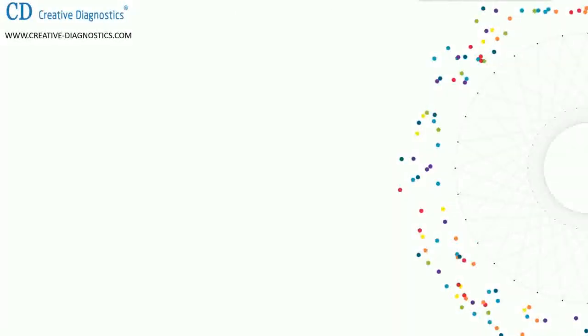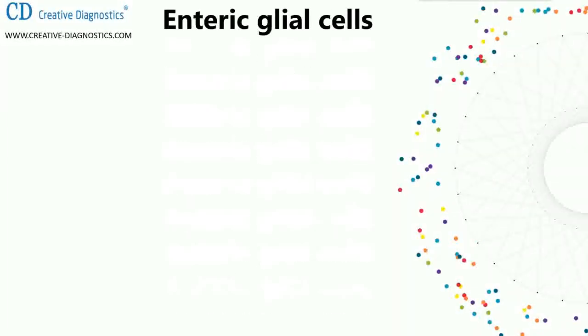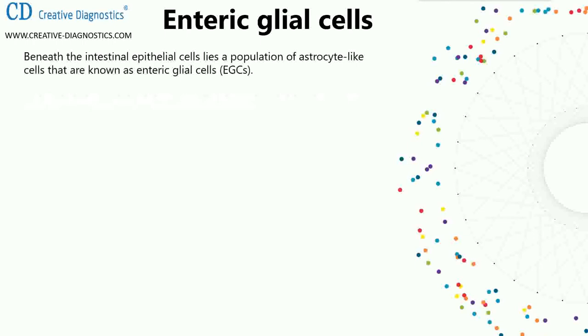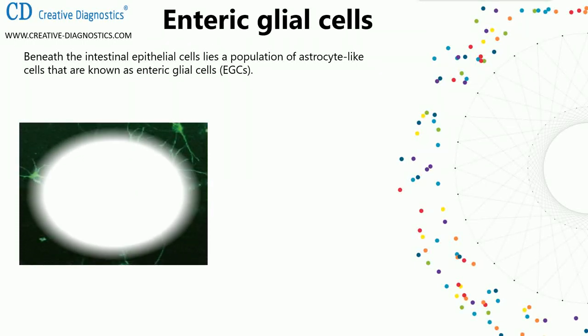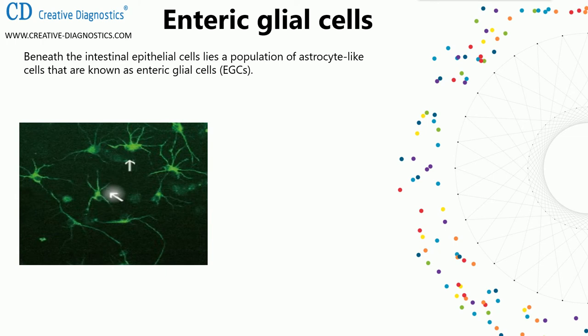Tenth: enteric glial cells. Beneath the intestinal epithelial cells lies a population of astrocyte-like cells known as enteric glial cells. Enteric glial cell markers include glial fibrillary acidic protein (GFAP), S100-beta, and SOX10.